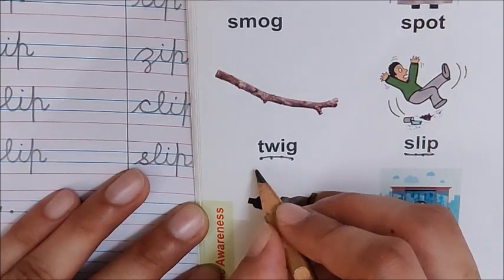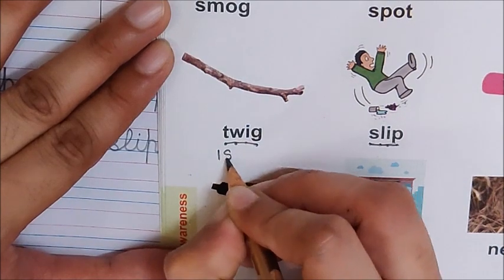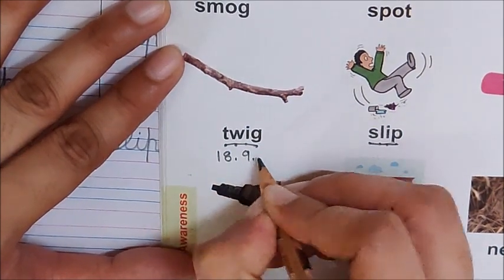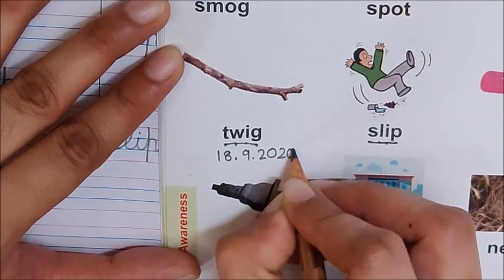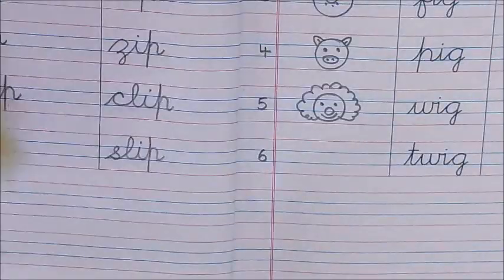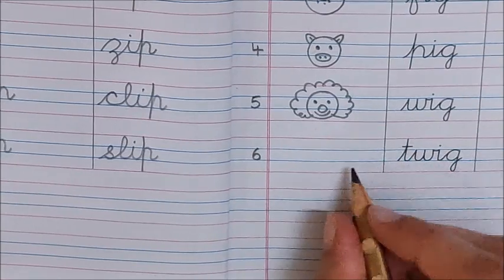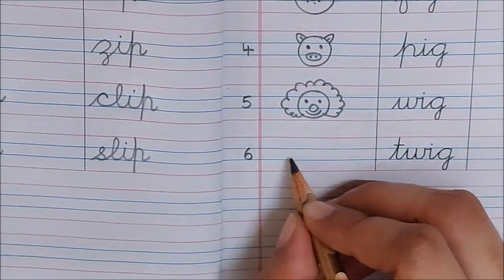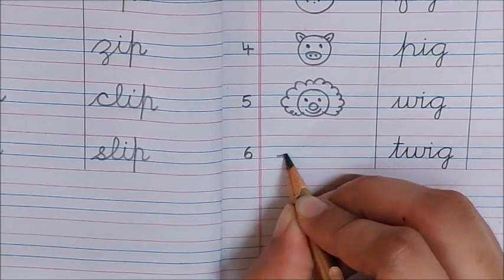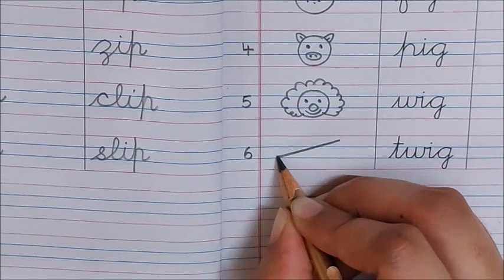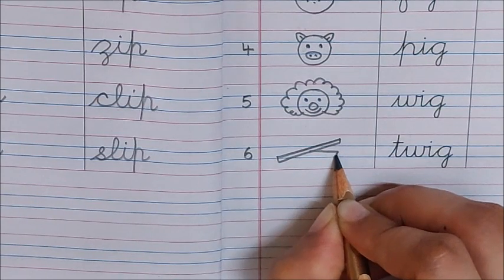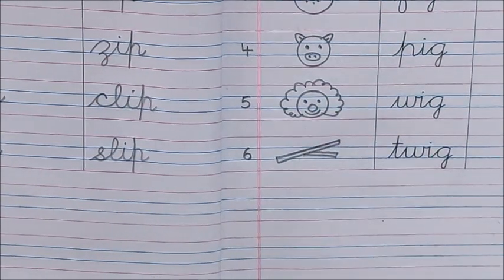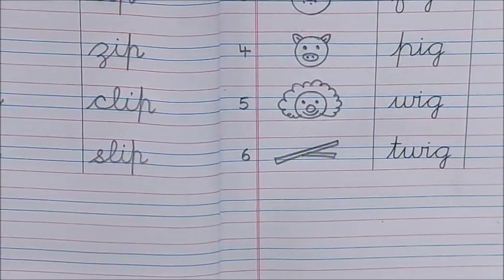Now write down the date below. 18 dot, 9 dot, 20, 20. Now children, time to draw twig here also. Twig is very thin. So draw like this. And here is our twig.